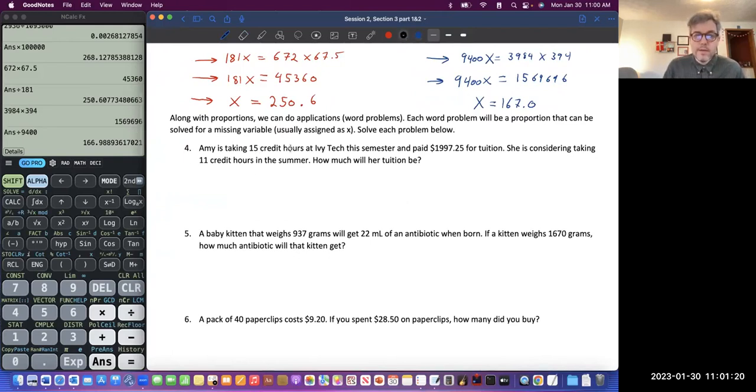Let's keep going. So Amy is taking 15 credit hours at Ivy Tech this semester and paid $1,997.25 for tuition. She's considering taking 11 credit hours in the summer. How much would tuition be? So we want to set up the proportion. How can we do this? I'm going to set it up with $1,997.25 divided by 15 equals, we have 11 that we're thinking about taking, and we don't know how much that would be.